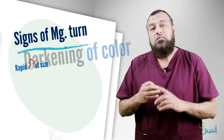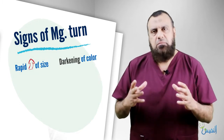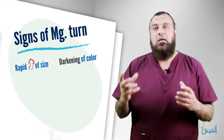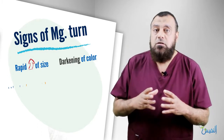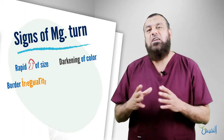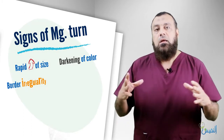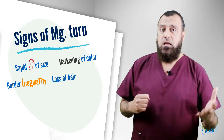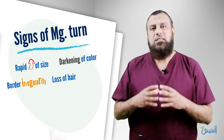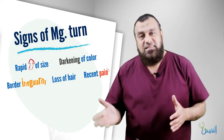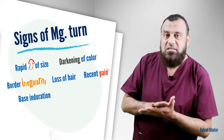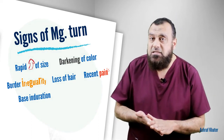Number two is darkness of the nevus — it was brownish and now it is dark brown. The third sign is border irregularity — it was a regular border and now it is an irregular border. There may also be loss of hair if it was hairy. Or it becomes painful after being painless.